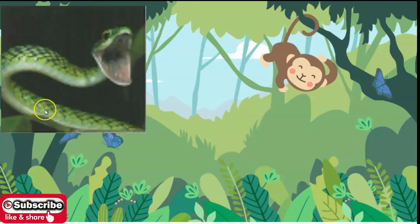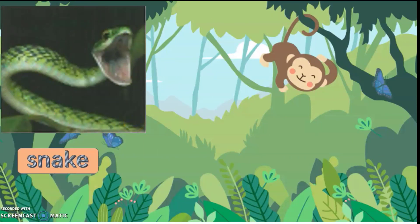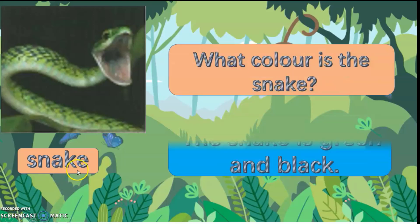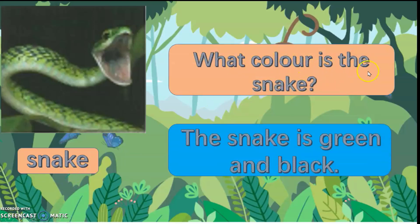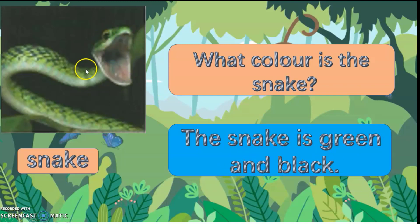What animal is this? This is a snake. What colour is the snake? The snake is green and black.